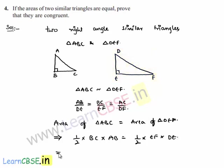This implies that one-half cancels on both sides, and we can write BC by EF equals DE by AB.